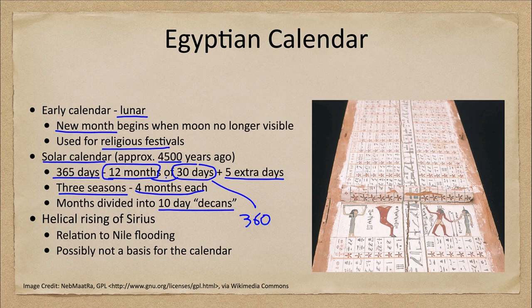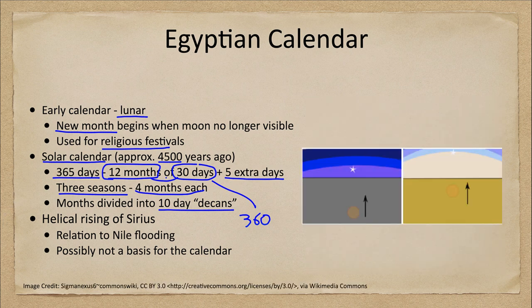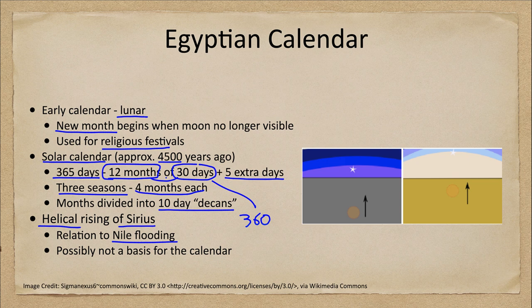One common topic related to the Egyptian calendar is how it was set and how it related to the flooding of the Nile. What they looked for was the relationship of Sirius to the Nile flooding — specifically what we call the helical rising of Sirius. This means seeing Sirius in the morning sky just before sunrise, when it can first be picked out of the sun's glare.